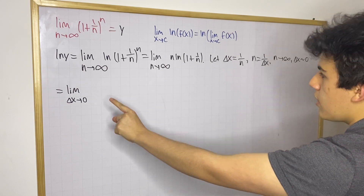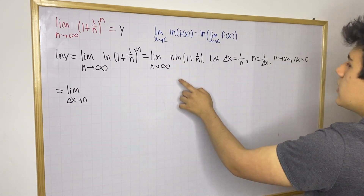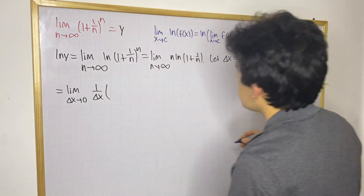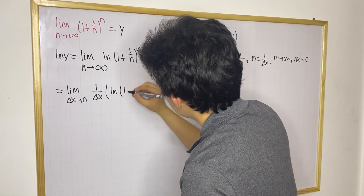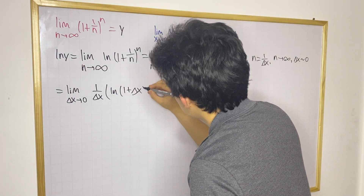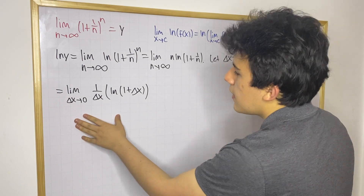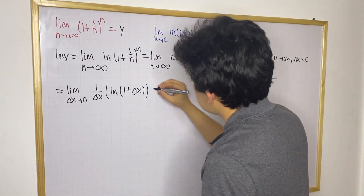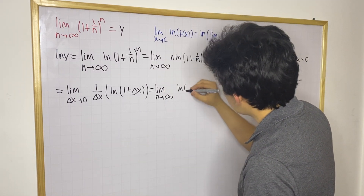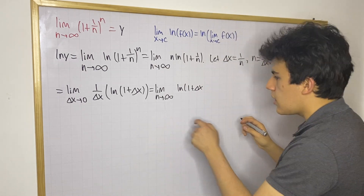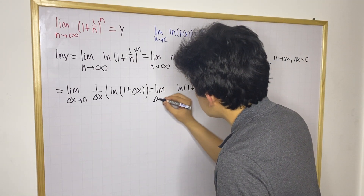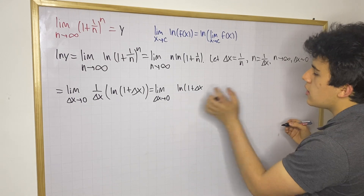So now we have delta x as our variable, and we want to change n for delta x. We know n equals 1/delta x, so we write 1/delta x times the natural log of (1 + delta x). So now this is the limit that we have, and we can write this as the limit as delta x approaches 0 of the natural log of (1 + delta x), all over delta x.